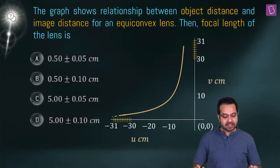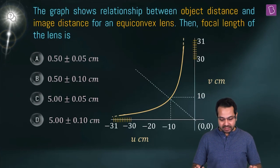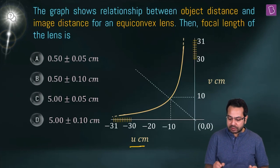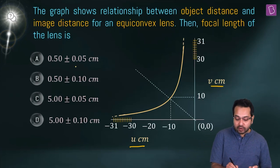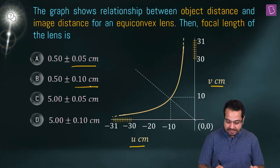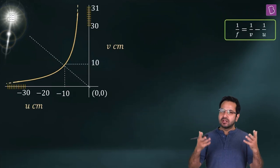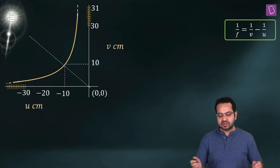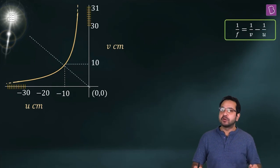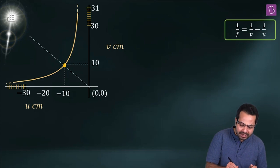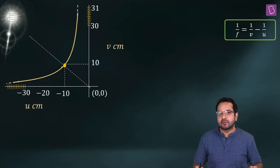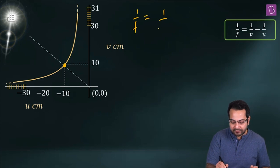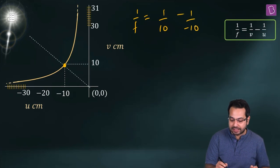The graph shows the relationship between object distance and image distance for an equi-convex lens, and we need to find the focal length. We know 1/f = 1/v − 1/u. At the given point, the object distance is −10 cm and the image distance is 10 cm. So 1/f = 1/10 − 1/(−10) = 2/10, giving f = 5 cm.